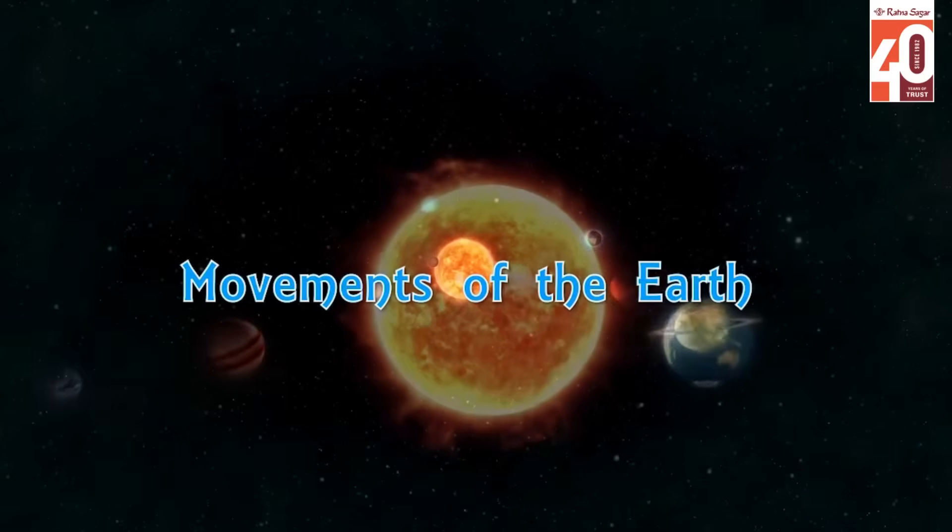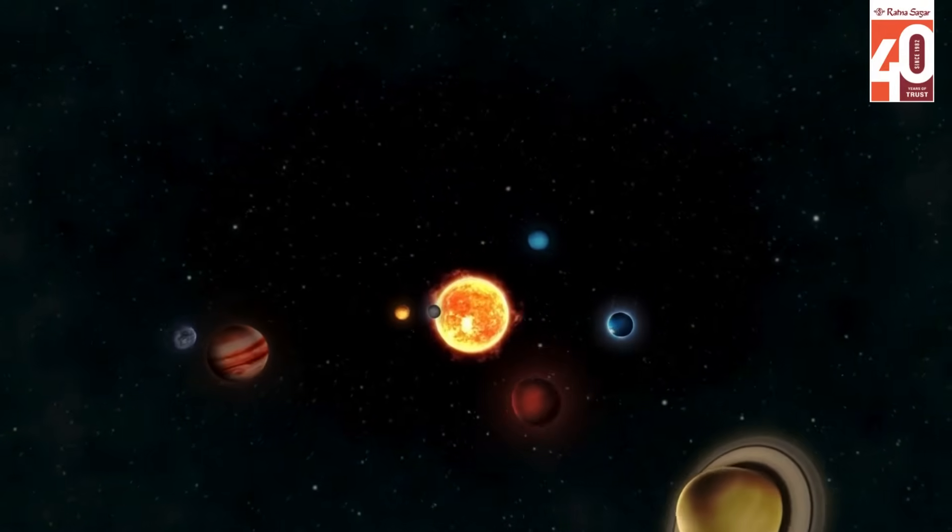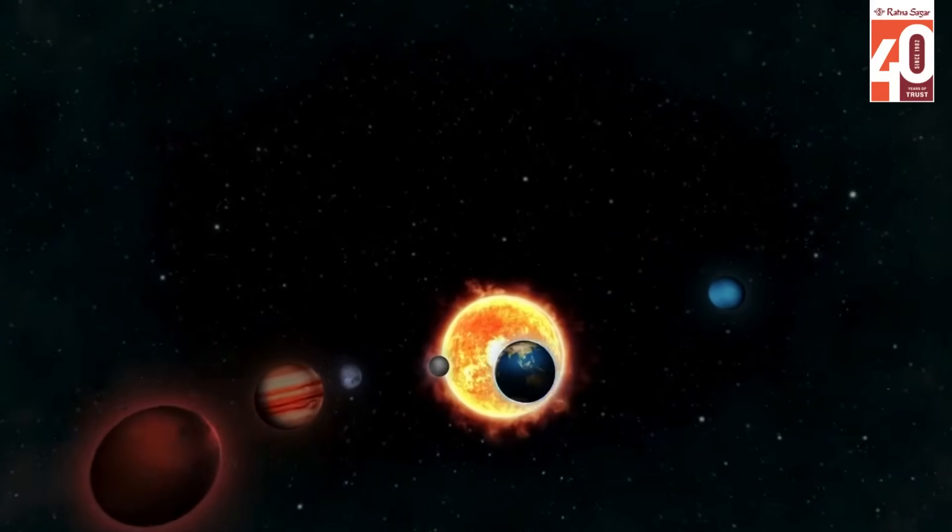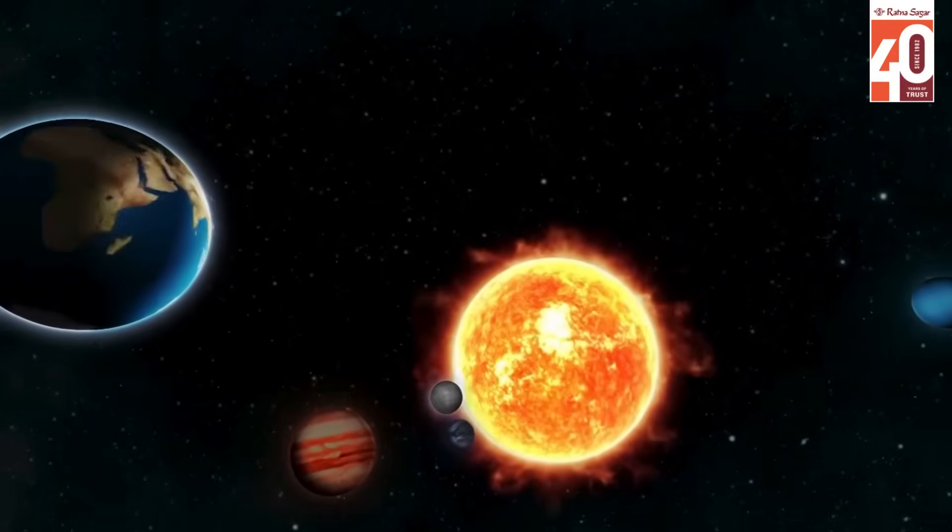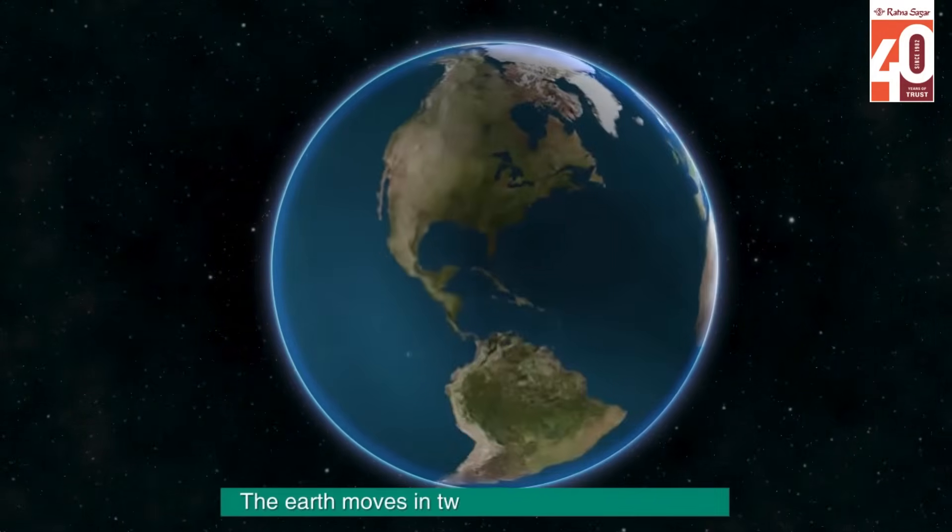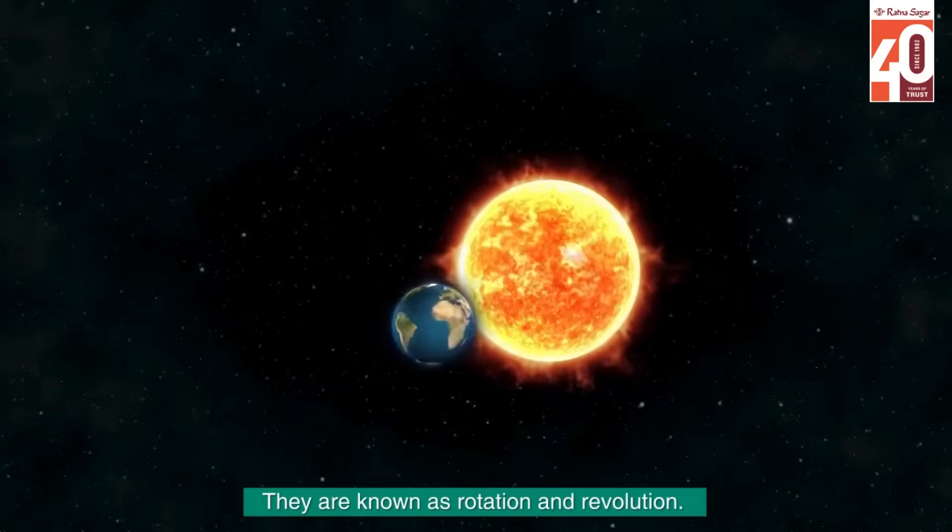Movements of the Earth. The Earth moves in two ways at the same time. They are known as rotation and revolution.